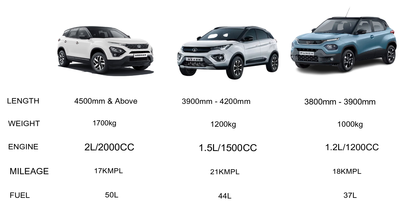The size difference is about 1,000mm in length. If you look at the height, there is only about a 10mm to 15mm difference — the height is more or less the same. As the size and length increase, the weight automatically increases. The large SUV weighs about 1,700kg, the compact SUV is 1,200kg, and the subcompact SUV is 1,000kg. So this is the external difference.